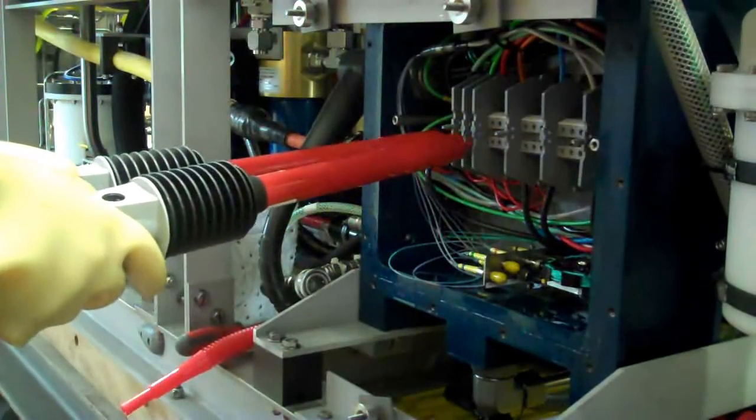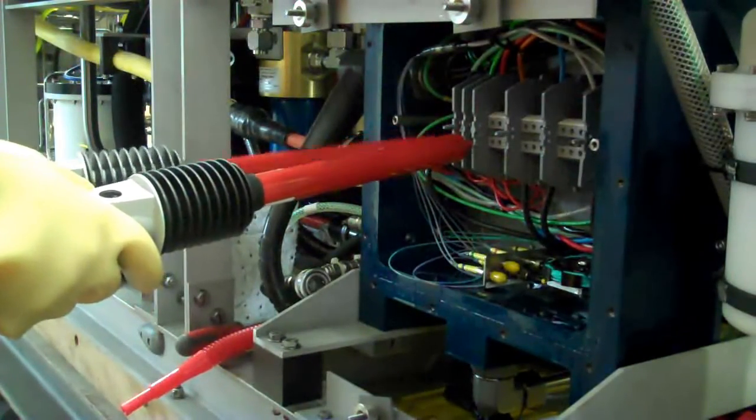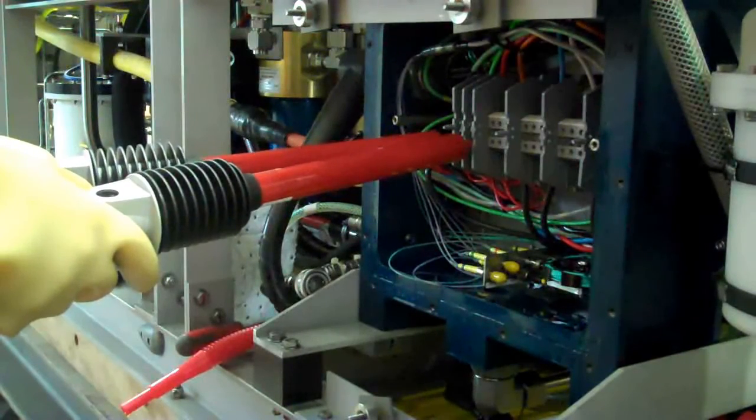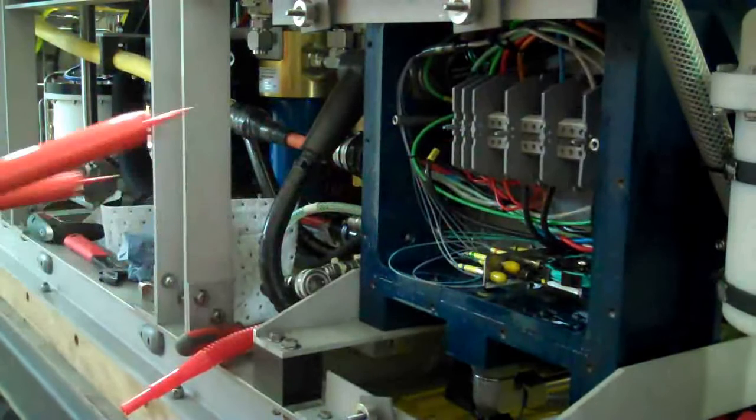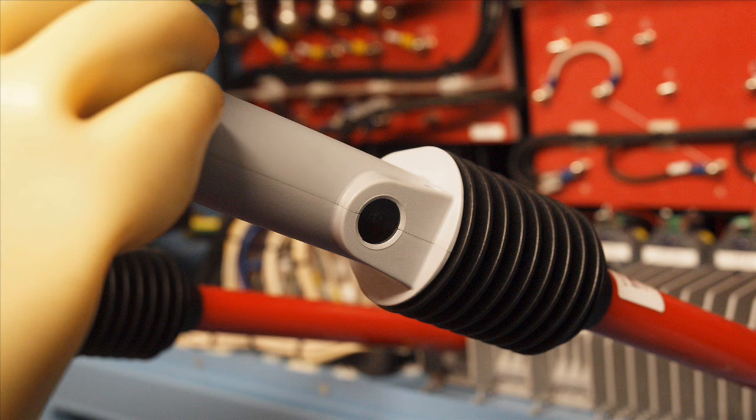The engineer now tests between phases on the main power conductors. He also tests between phase and earth. If the light on the probe were to glow it would indicate that there was a voltage present and the system would be unsafe to work on and the source of the charge must be investigated.